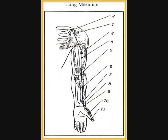Lung one indications: cough, asthma, pain in the chest, shoulder and back, fullness of the chest. Lung two indications: cough, asthma, pain in the chest, shoulder and arm, fullness of the chest. Lung three indications: asthma, epistaxis, pain in the medial aspect of the upper arm.